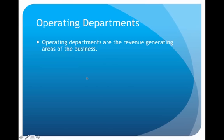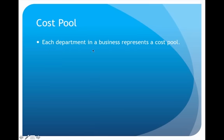Then we have the operating departments. These are the departments that are actually revenue-generating — in other words, these are departments that actually bring money into the business. These will be things like the sales department, the manufacturing department, and the warehouse — things that literally make products and services available so that we can have revenue.